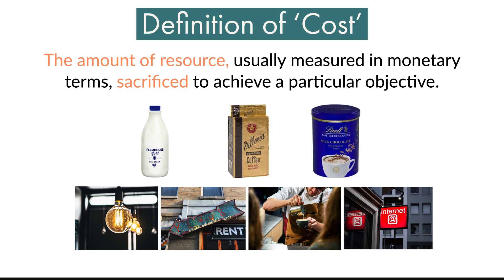Firstly, let us understand what we mean by cost. It is the amount of resource, generally money or dollars, which you let go of or sacrifice to achieve a particular objective. It could be buying a product or a service. Coffee beans, drinking chocolate, electricity, rent, staff salaries, and internet are some examples of costs incurred by Candy's coffee shop. Costing means understanding and identifying the costs of particular activities and decisions, and this is a key part of management accounting.